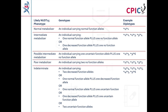Metabolizer phenotypes can also be assigned to NUDT15 diplotypes, as shown in this table adapted from Table 1 of the guideline. Gene information tables for NUDT15, including a diplotype-phenotype table, are also available on the PharmGKB website; a link is given in the description below this video.